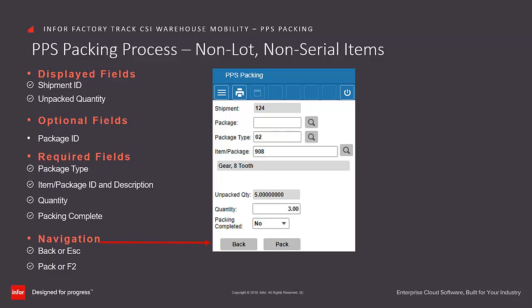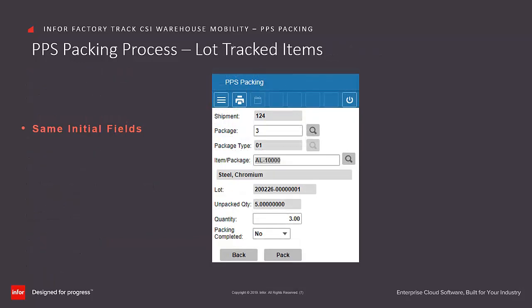Click on Pack to continue with processing. FactoryTrack will prompt the user to select remaining items to continue with the pack process as needed. For a lot tracked item, PPS Packing is a similar process with an additional lot-specific field. The PPS Packing screen displays the Lot ID associated with the items that were previously picked for this shipment. Click on Pack to continue, and FactoryTrack will prompt the user to select the remaining items as needed.